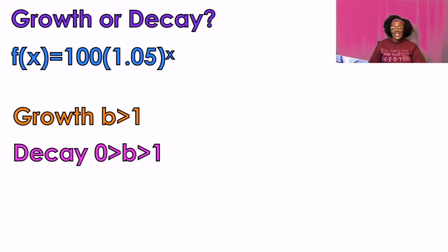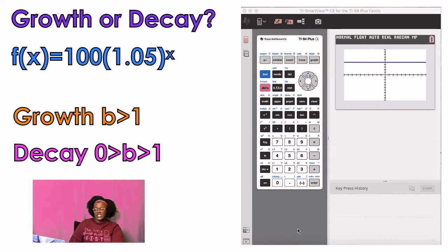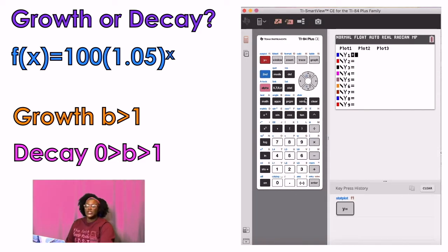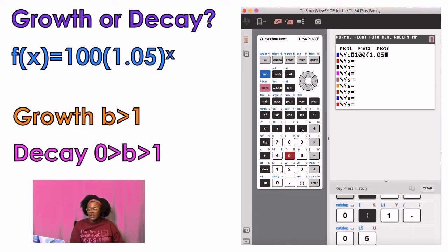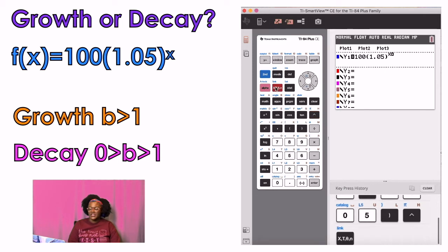So growth or decay. What is my B value? My B value is 1.05. Is that greater than one or is it between zero and one? Clearly, it is going to be greater than one. But let's talk about what that looks like on a graph. So we're going to use our little TI calculator. I'm using my smart view so that you guys can see. And I'm typing the function in 100 parentheses 1.05. I'm going to use the little caret button to put a power of x in there.